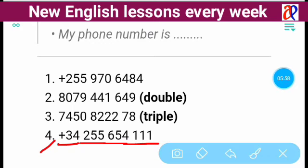Without using 'double' and 'triple,' you say: plus three four two five five six five four one one one. When you apply 'double' and 'triple,' the number becomes: plus three four two double five six five four triple one.